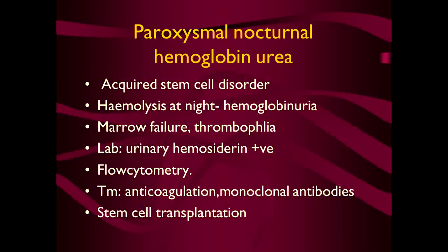The next variety is paroxysmal nocturnal hemoglobinuria. The name is indicative that it occurs at night and in paroxysms — not a gradually progressing disorder. Usually at night the patient goes to sleep and when he wakes up in the morning he passes coca-cola colored urine, making him a suspected case of PNH. It is an acquired stem cell disorder; there is hemoglobinuria at night, eventually marrow failure, and the patient may also be complicated by thrombophilia.